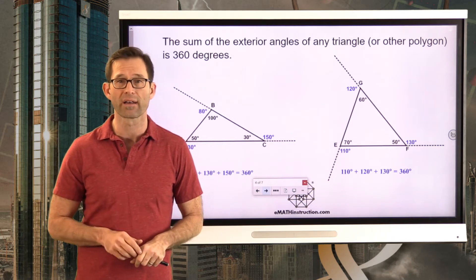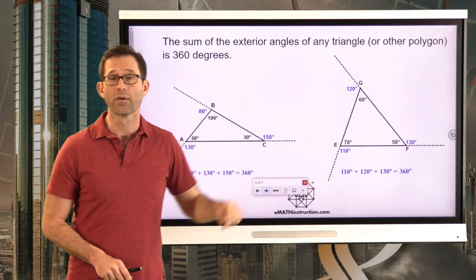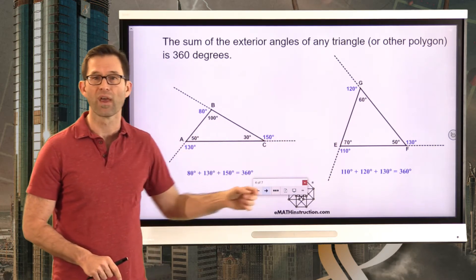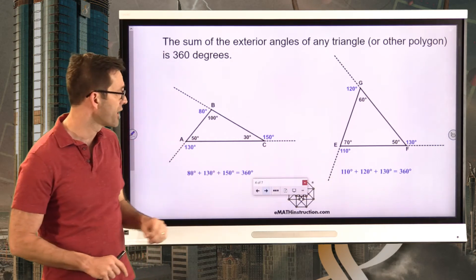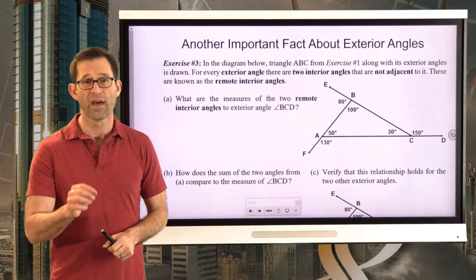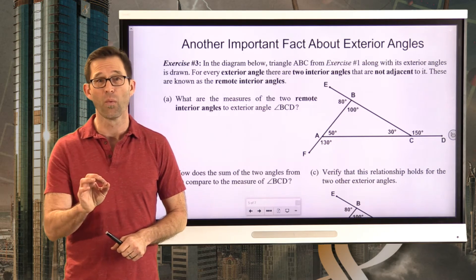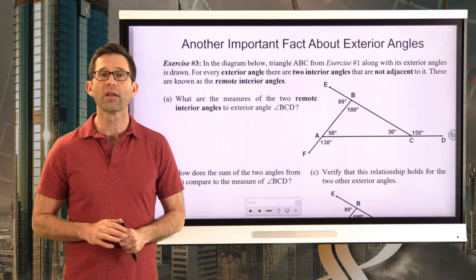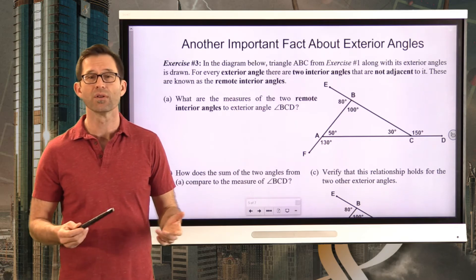We saw that in both diagrams — in both cases the angles summed to 360. It doesn't get used nearly as much as the fact that the sum of the interior angles of a triangle are equal to 180, but it's still an interesting fact about the exterior angles. We're going to look at another important fact about exterior angles in exercise three.